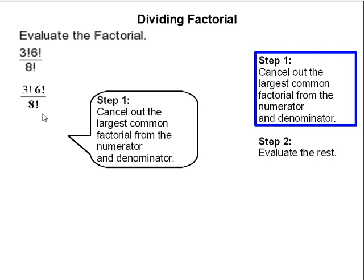In order to cancel out the largest common factorial, we have to understand that factorial is the number times one less and one less until you reach one. So, 6 factorial is 6 times 5 times 4 times 3 times 2 times 1, and 8 factorial is 8 times 7 times 6 times 5 times 4 times 3 times 2 times 1.